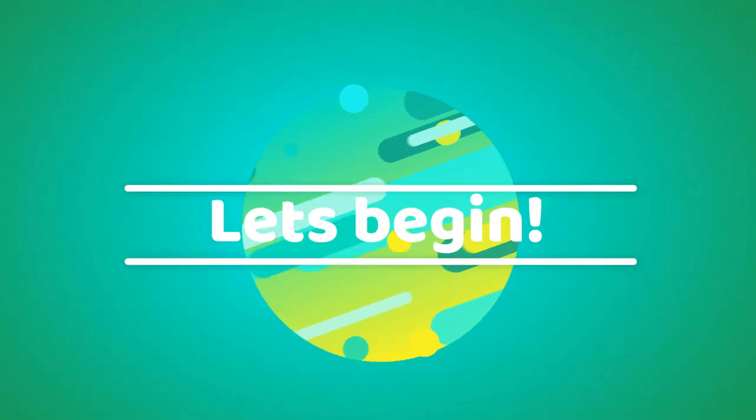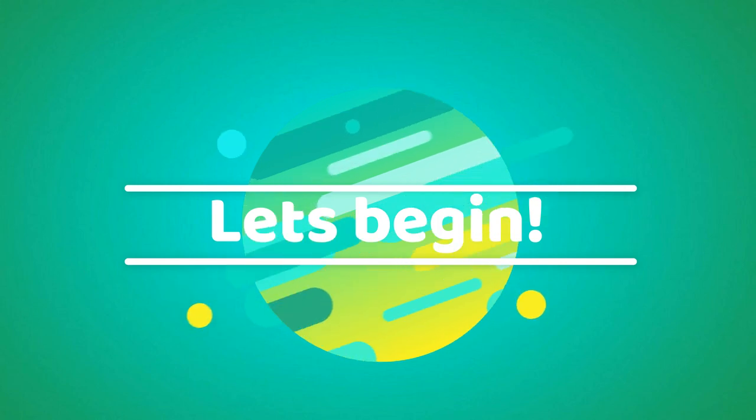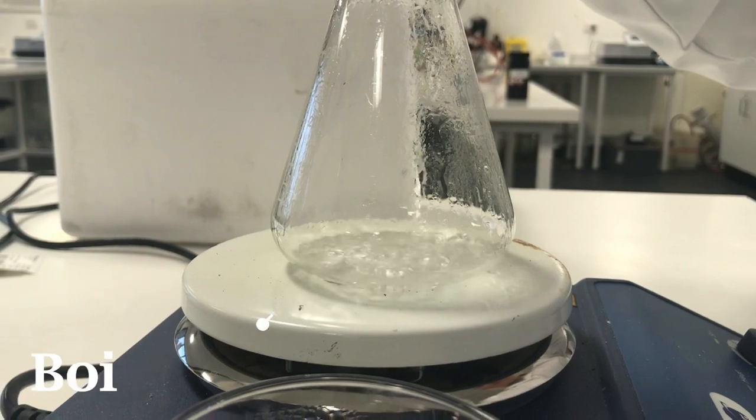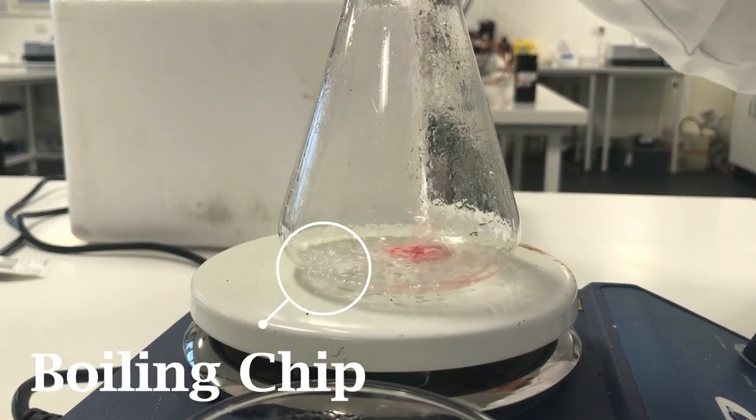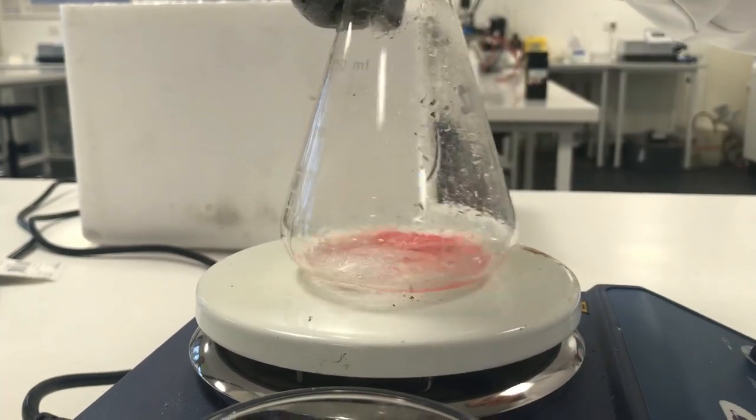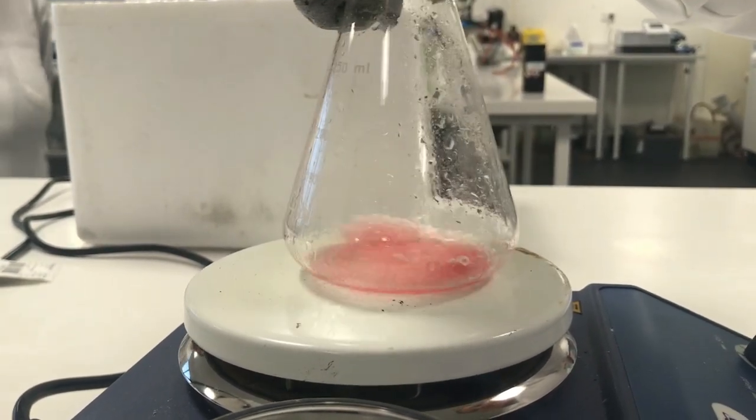In a 250ml beaker heat around 100ml of water on the hot plate until it's boiling. In a separate conical flask place one boiling chip into 10ml of water and heat until boiling. Add a gram of benzoic acid and swirl until it dissolves completely. You should be left with a pink solution.